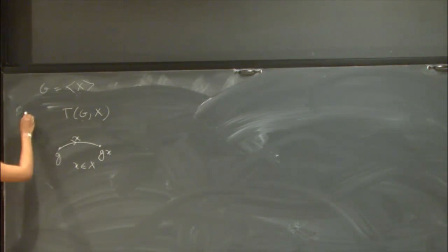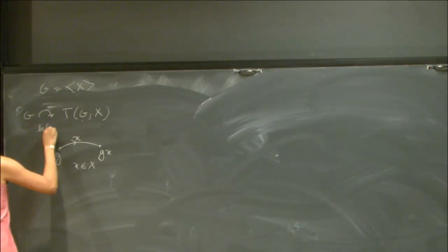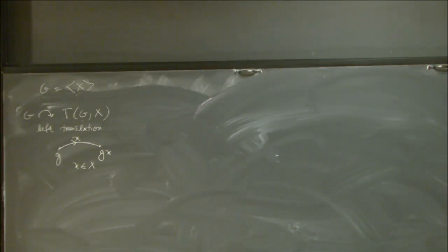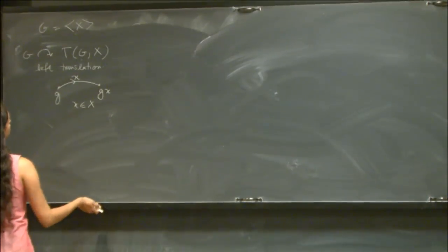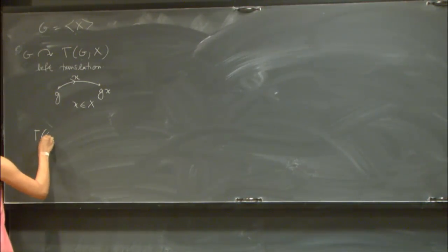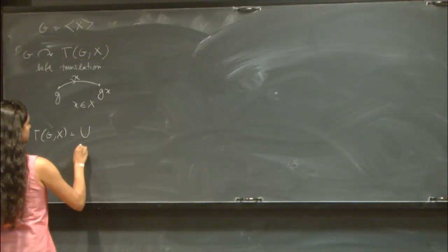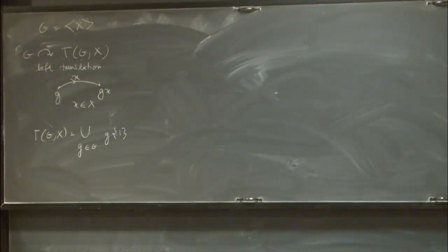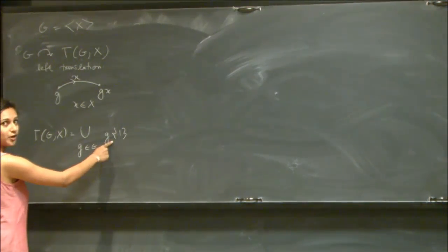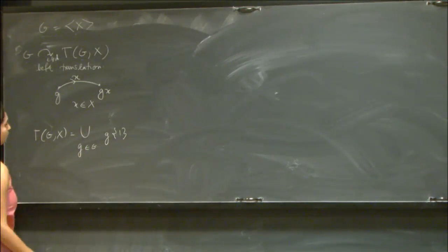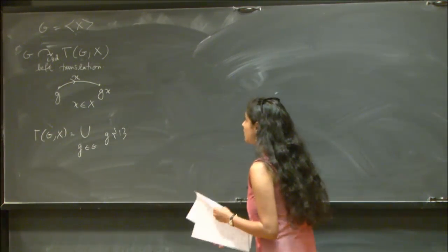The vertices of my Cayley graph are elements of my group G, and G is connected to the element gx by an edge labeled by an element x from my generating set. What you can observe is that the group has a very natural action on its own Cayley graph, acting by left translations. The action of a group on its Cayley graph is always co-bounded because this Cayley graph can be written as the union of translates of the identity: if I take a group element and act on the identity I get precisely that group element, covering the entire vertex set.